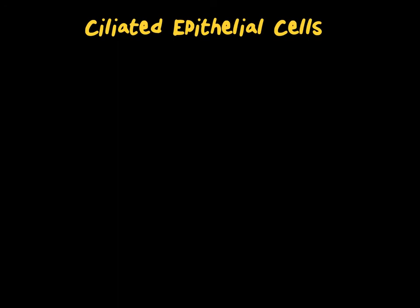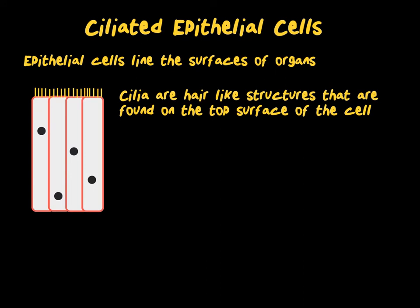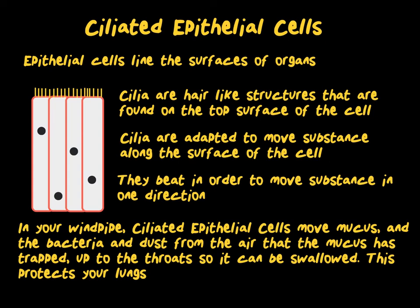The third and final specialised cell we're going to look at is the ciliated epithelial cell. Epithelial cells are cells that line the surfaces of all of your organs. A large number of epithelial cells have cilia on their top surface — these are hair-like structures that are adapted to move substances. The cilia beat to move substances in one direction along the surface of these cells. For example, in your windpipe, these help to move mucus upward. This mucus has collected bacteria and dust from the air, and it moves it up to the throat so that you can swallow it, preventing it from reaching your lungs.